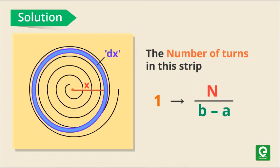Therefore, in a strip of length dx, the number of turns dN would be equal to N/(b-a) times dx turns.